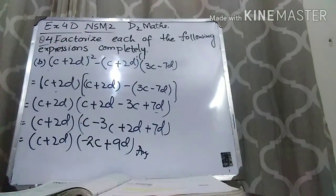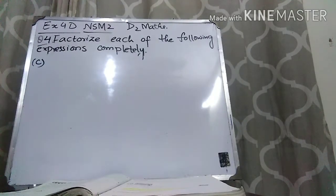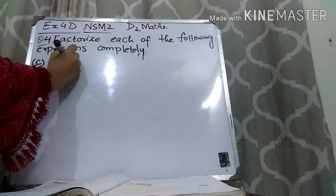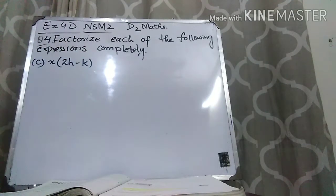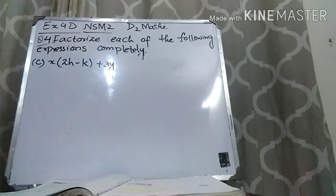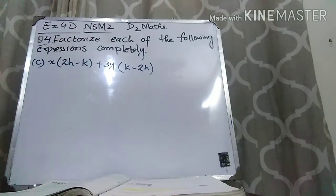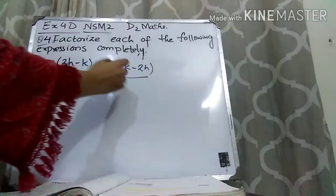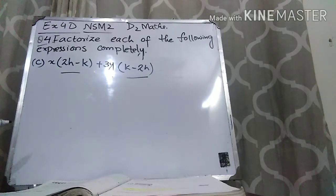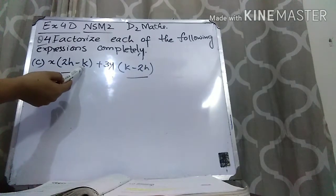I hope part b is clear to you. Now let's move to part c. Part c is: x(2h minus k) plus 3y(k minus 2h). The brackets are almost the same but the signs are different — with 2h there is a plus sign in the first bracket and minus in the second, and with k there is minus in the first and plus in the second.